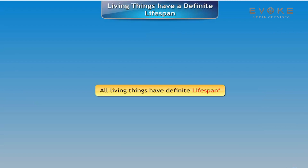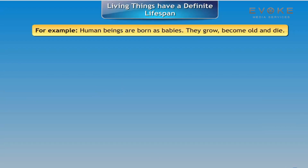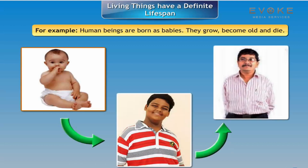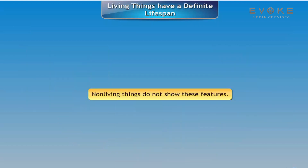All living things have a definite life span. For example, human beings are born as babies, they grow, become old, and die. Non-living things do not show these features.